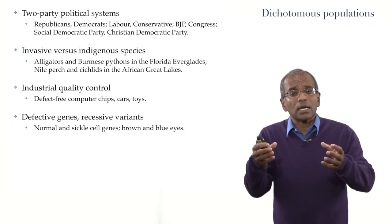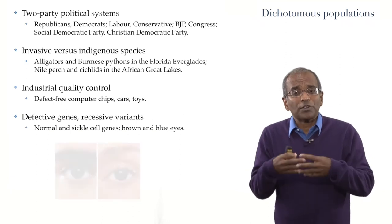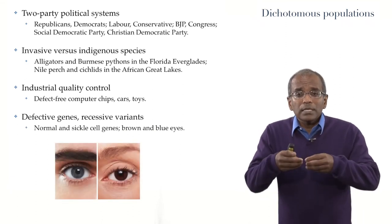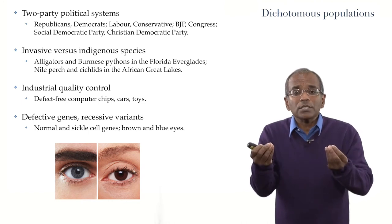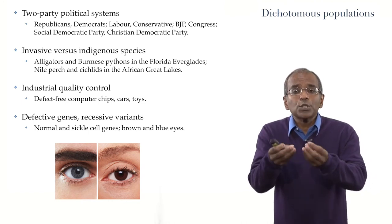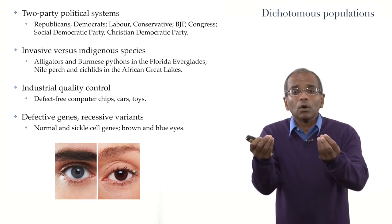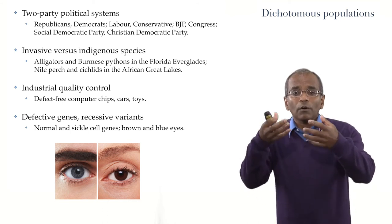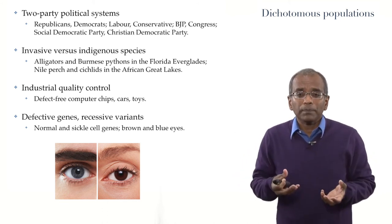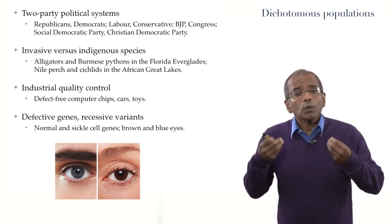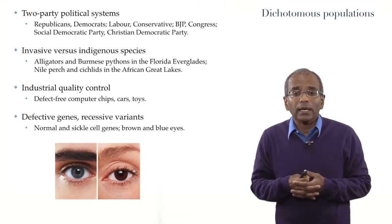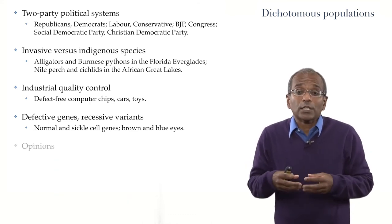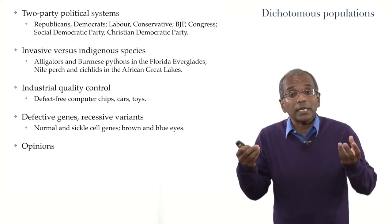Still yet another example of a dichotomous population: we have already seen examples of recessive and lethal genes. Different genetic variations — let's say there are two of them — cause a dichotomous population falling into one or the other camp. What proportion of the population has got a recessive and lethal gene, say that of sickle cell anemia?